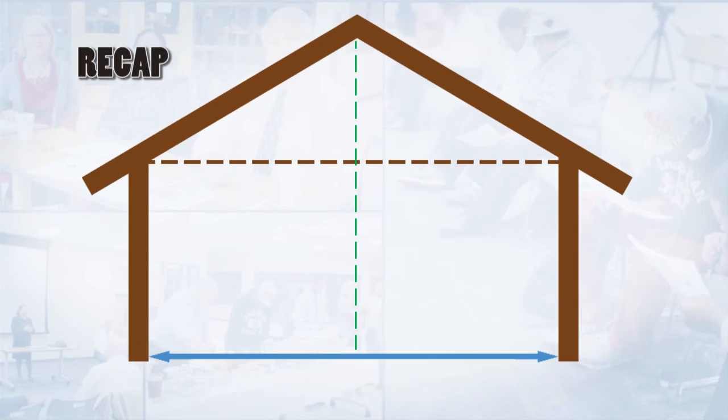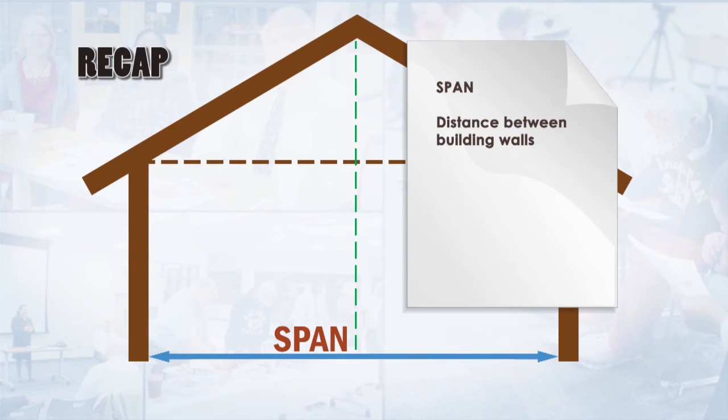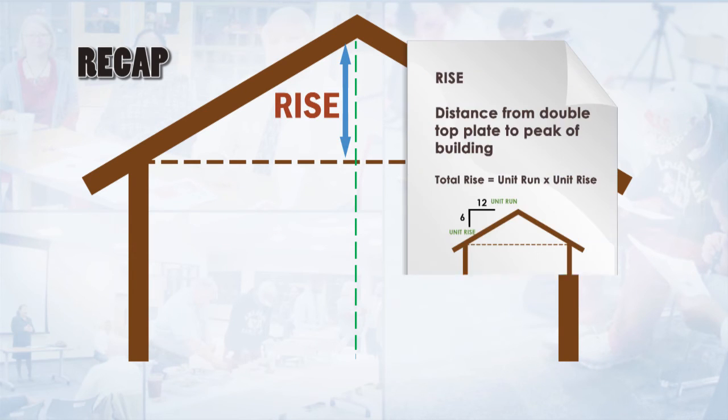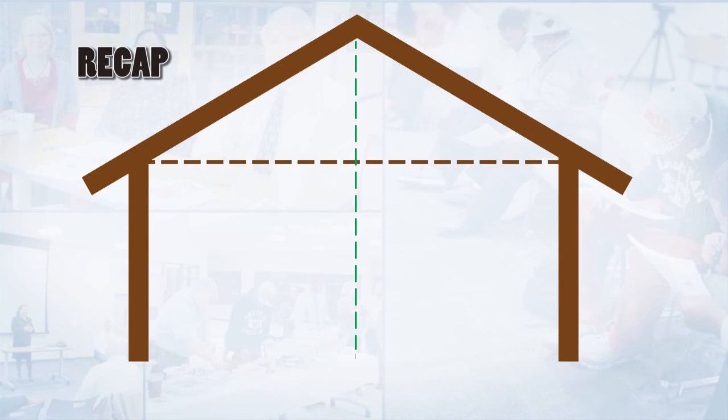This distance is the span of the building. The run is always one half the span. The rise is the distance from the double top plate to the peak of the building.